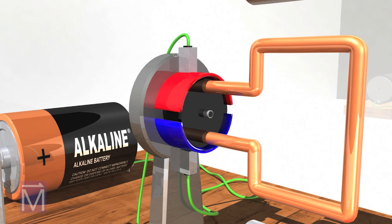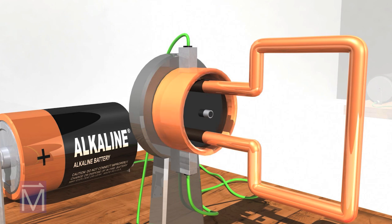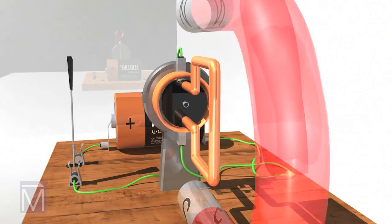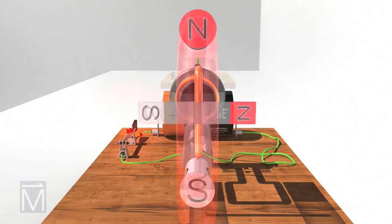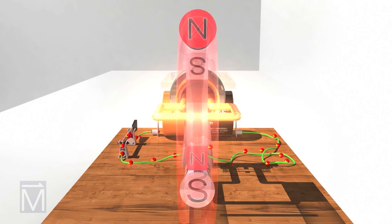The cleverly designed commutator is key to making the DC motor work. To see why, we'll temporarily replace it with this copper ring, which has no gaps. The bar magnet again represents the magnetic field generated in the coil. As you see, this is still not much of a motor.